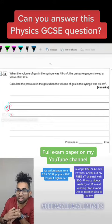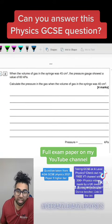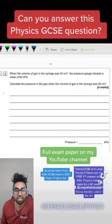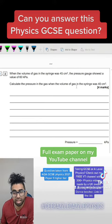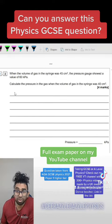Hey everyone, can you answer this physics GCSE question? When the volume of a gas in a syringe was 45 centimeters cubed, the pressure gauge showed a value of 60 kilopascals. Calculate the pressure in the gas when the volume of the gas in the syringe was 40 centimeter cubed.